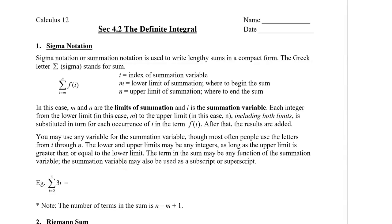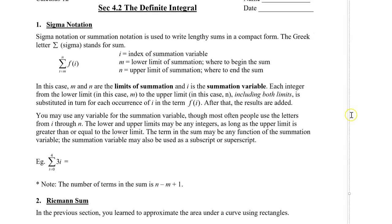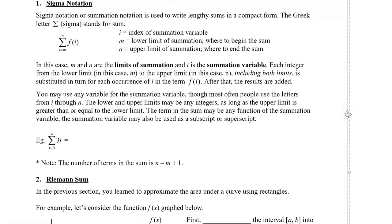And the summation variable may also be used as a subscript or superscript as well. So just to kind of help you understand how the sigma notation works, I have a simple example here. So we have the sum from i equals 0 to 4 of the function 3i. So how this works is that we're going to plug in the number 0 in for i. So we have 3 times 0. And then we're going to add the next term. So we increase to the next integer, which is 1.